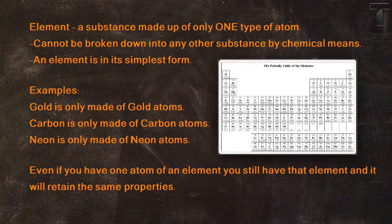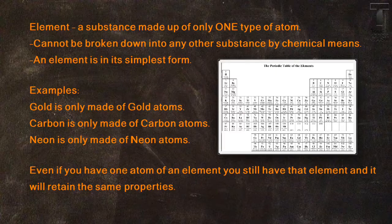Since an element is made of only one type of atom, that means gold is only made of gold atoms, carbon is only made of carbon atoms, and neon is only made of neon atoms. Even if you have one single atom of an element, you still have that element and it will still retain the same properties.